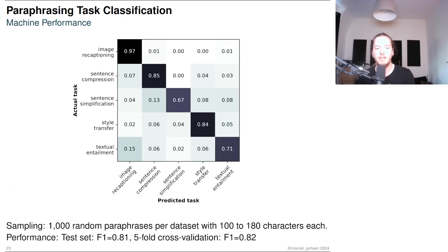Here we can see the performance of our automatic classifier on the test set that contains 1,000 random paraphrases per dataset. We reached an F1 of 0.81 on the test set and an F1 of 0.82 in a 5-fold cross-validation. We can also see similar confusions between sentence compression and sentence simplification examples as in the human experiment.